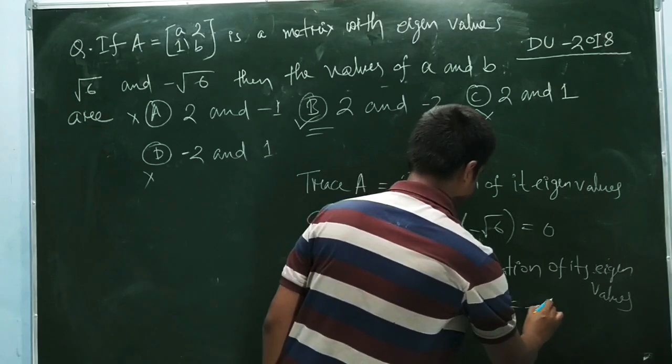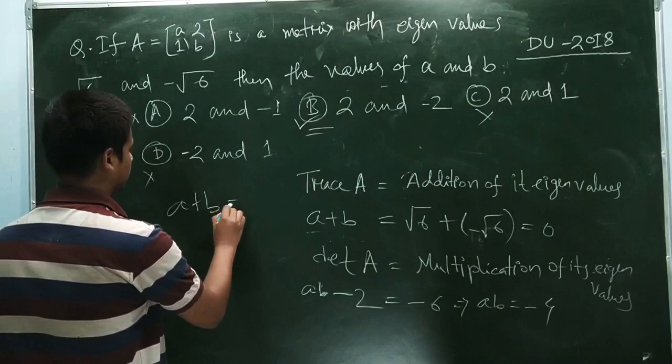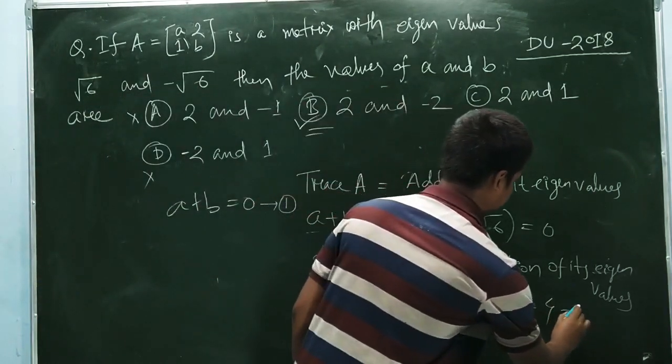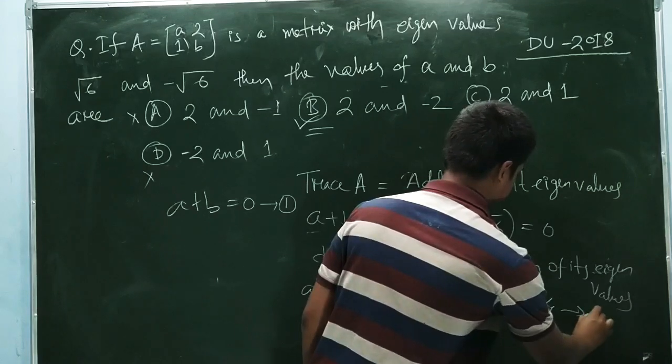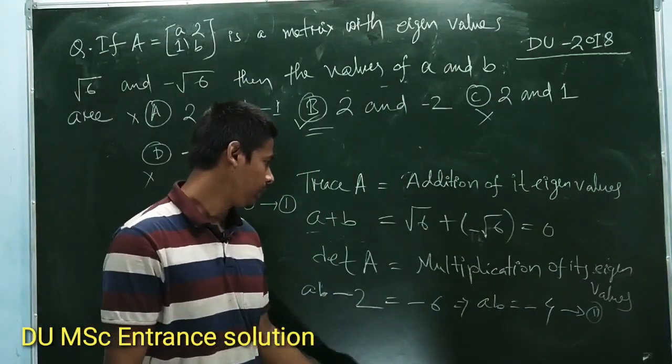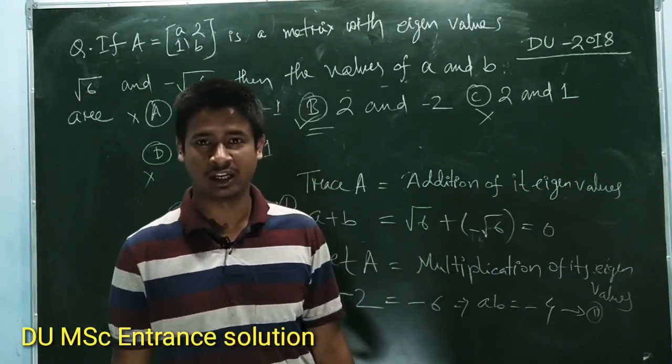So from this, a plus b equals 0 is one equation, and another is ab equals minus 4. From these two equations we can easily solve the values of a and b. So this is the solution, thank you.